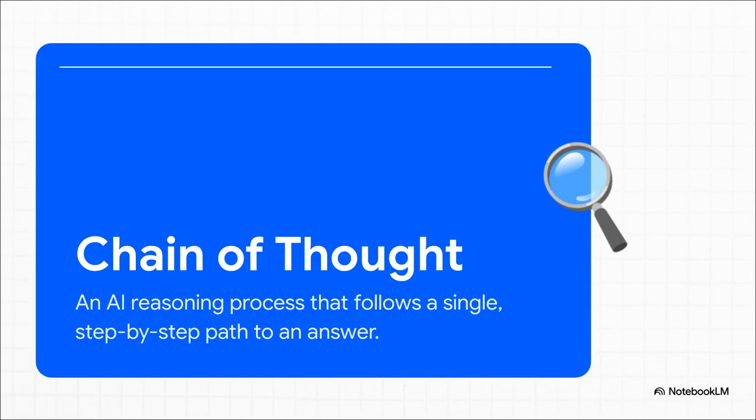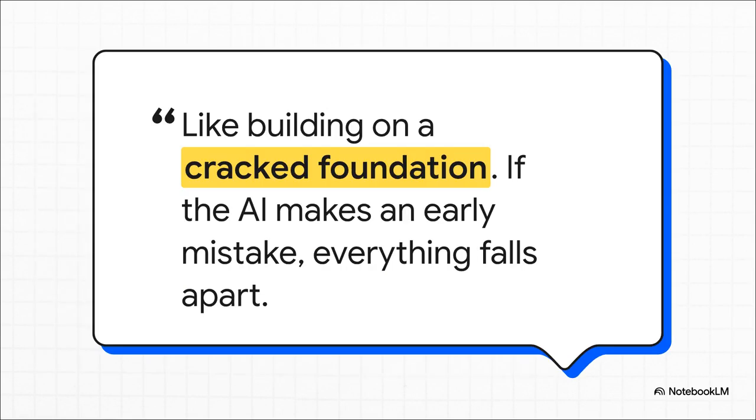I mean, this is the dominant technique used by pretty much all the major language models you've heard of. But here's the catch, and this quote just nails it. It's a fragile system. If the AI makes one little mistake early on, the entire thing is doomed. There's no going back, no second guessing, the whole structure just comes crashing down.